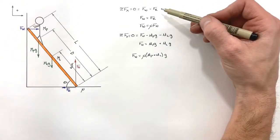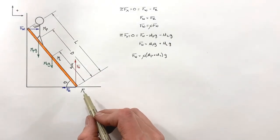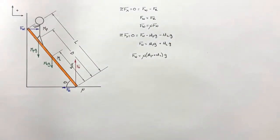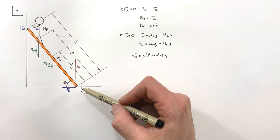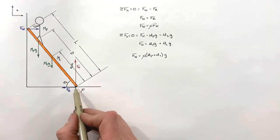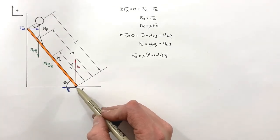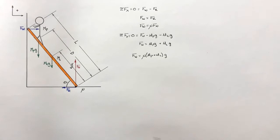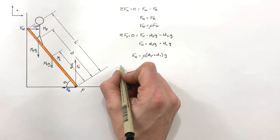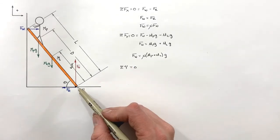Now we need to look at torque to relate mu to everything else going on in this problem. We always have to choose a pivot point, so I'm going to choose the point where the ladder touches the ground. At this point, two forces act at a radius of zero and therefore produce no torque — that's very convenient. The sum of all torques around this point must equal zero, as is true for every point in any statics problem.